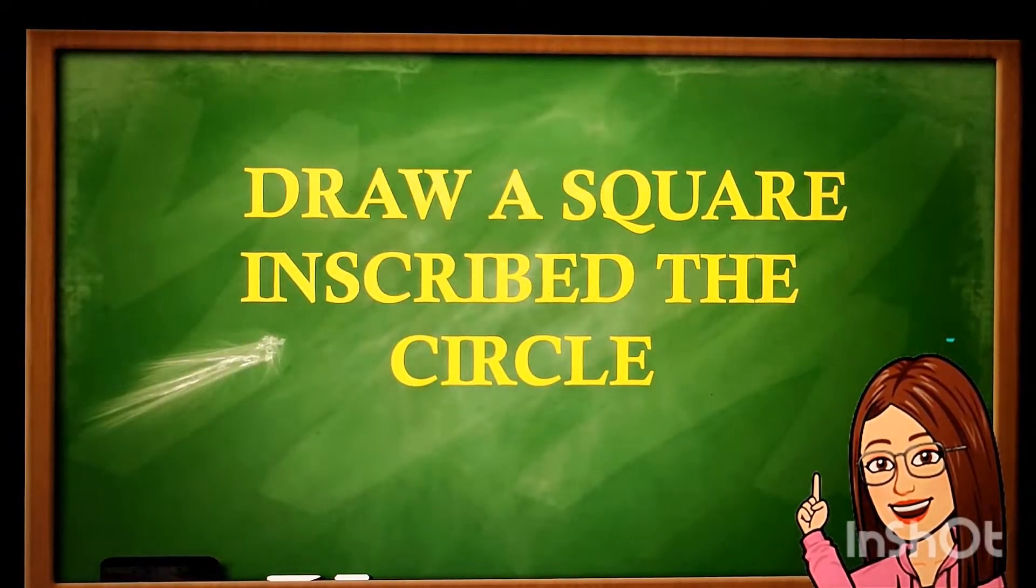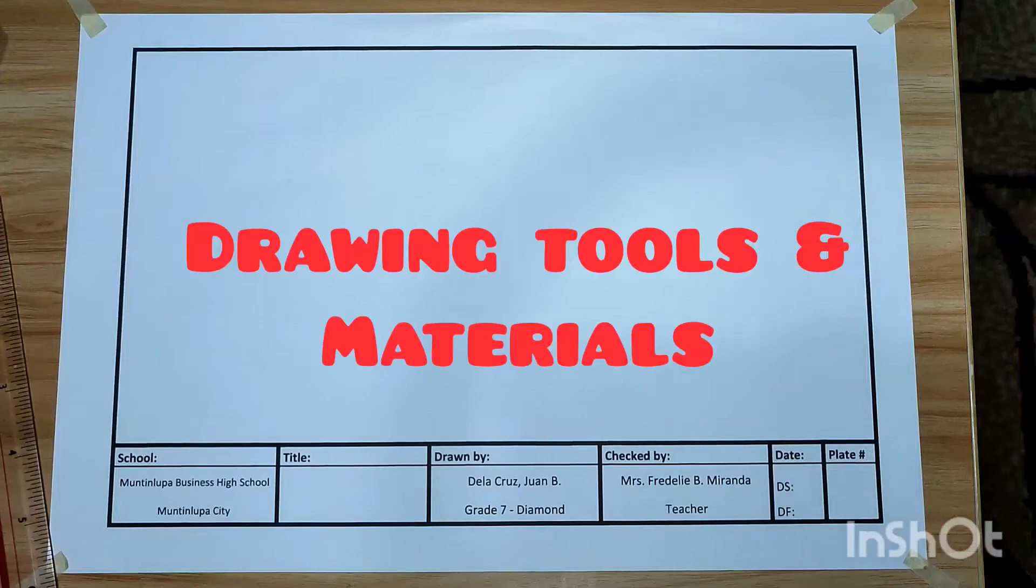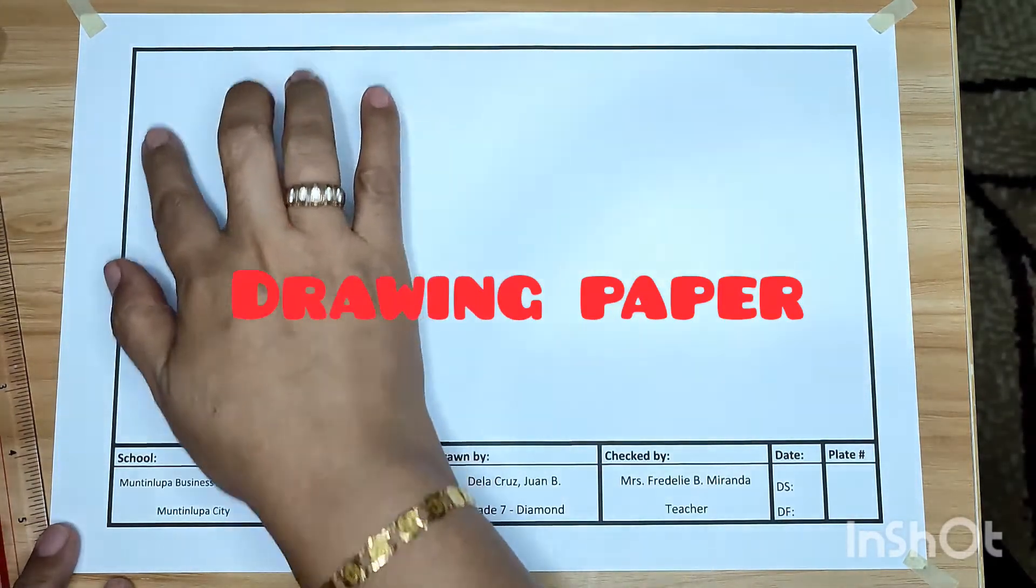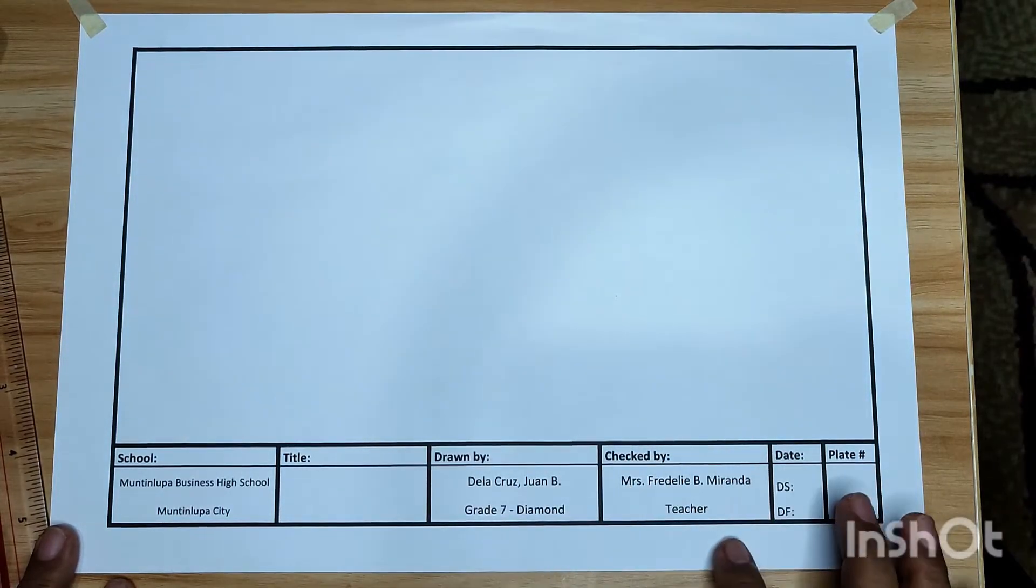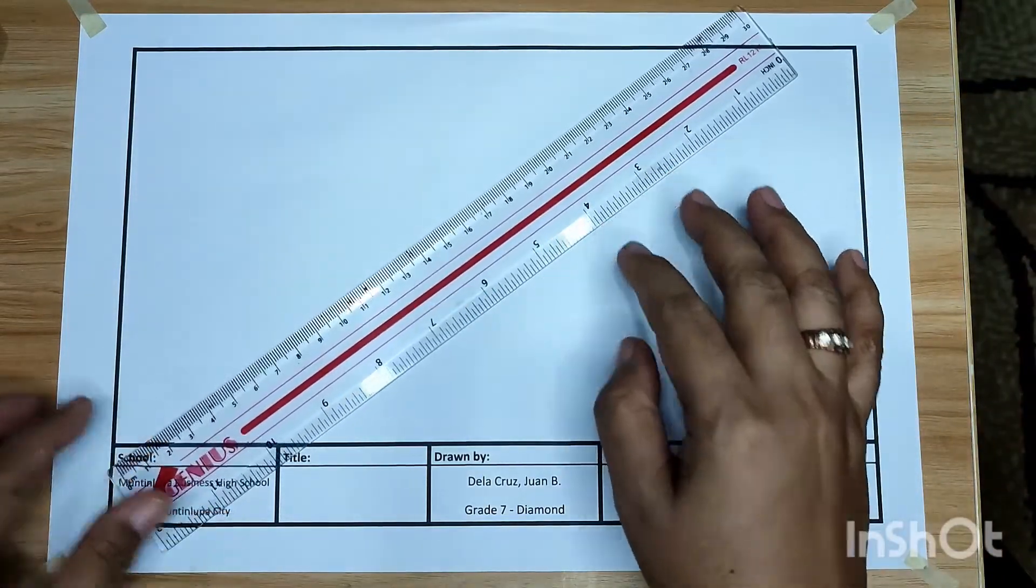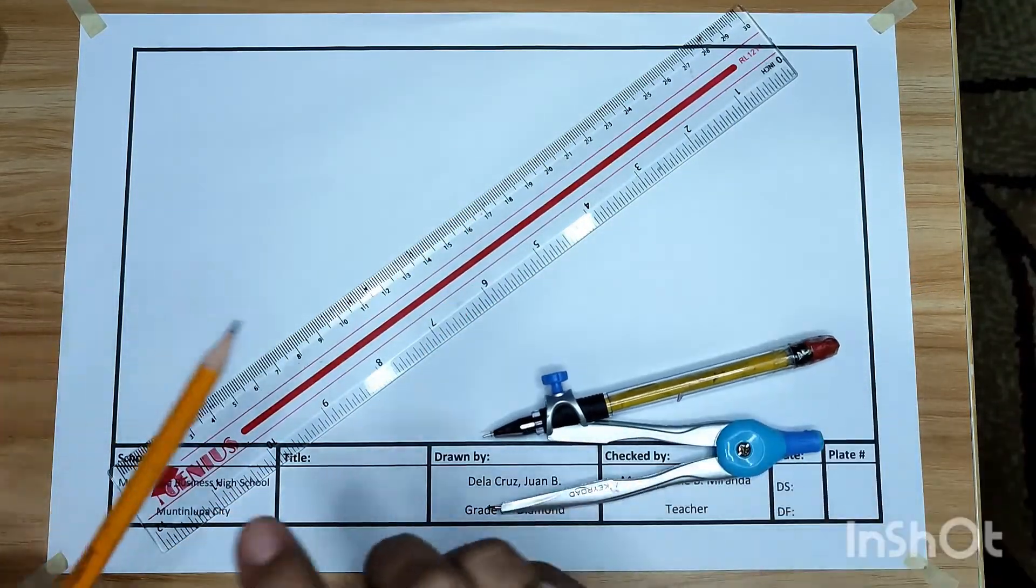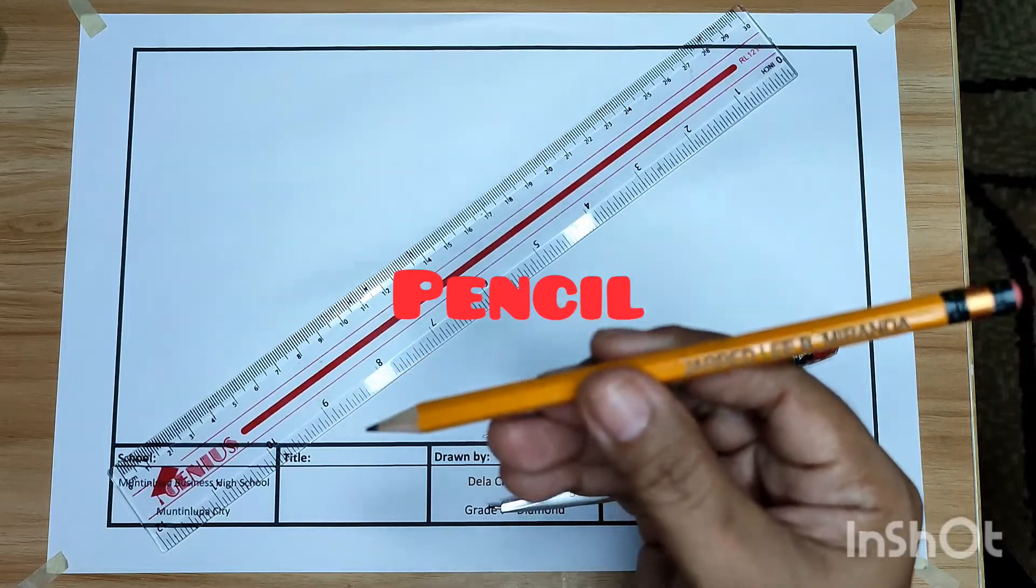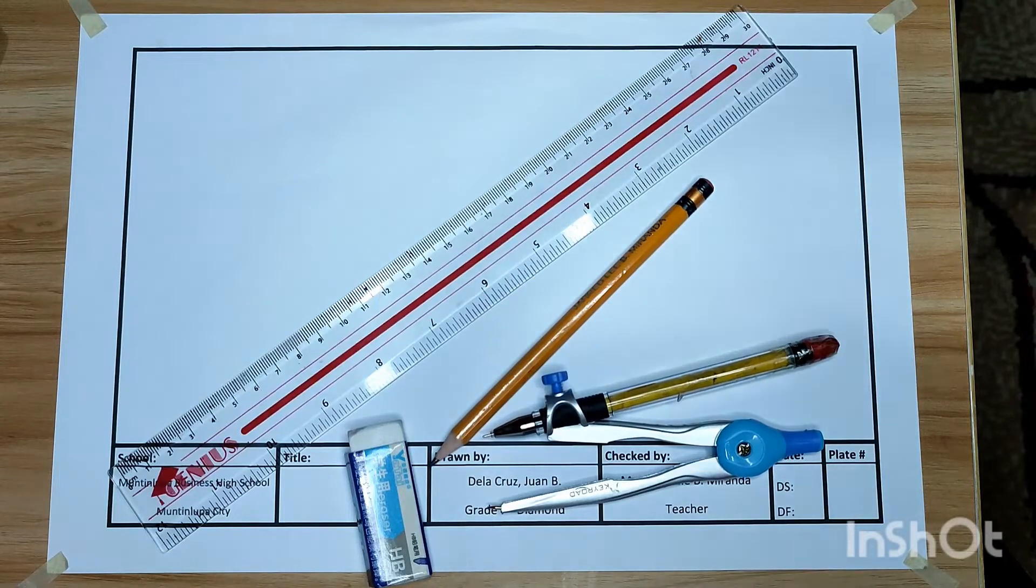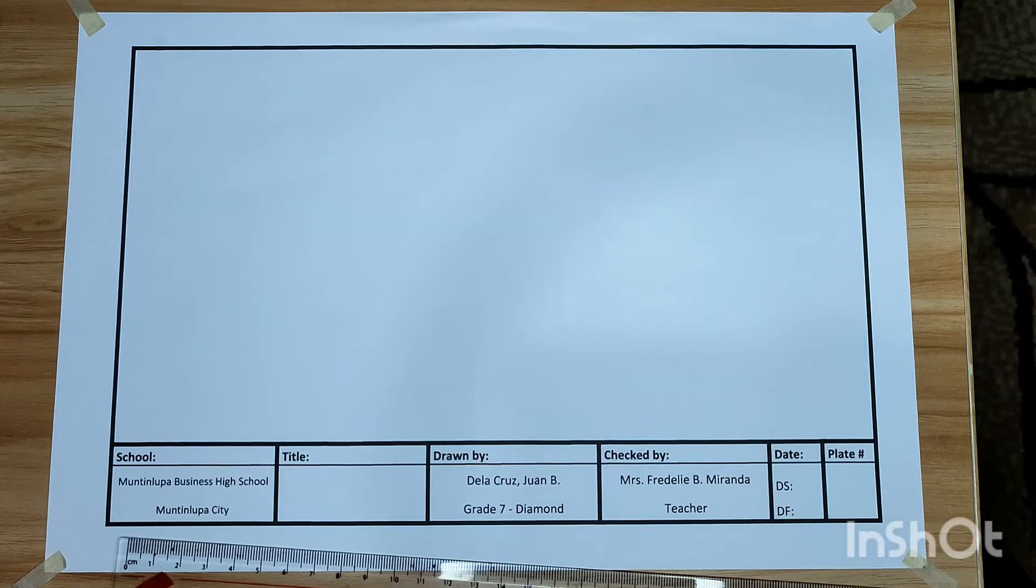Are you ready to draw a square inscribed in a circle? Drawing tools and materials needed are drawing paper with borderline and title block, foot rule, compass, pencil, and eraser. Are you ready to construct a square inscribed in a circle? Let's begin.